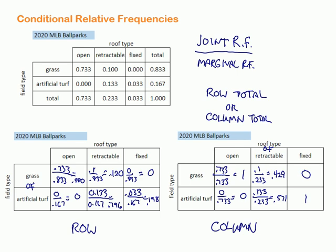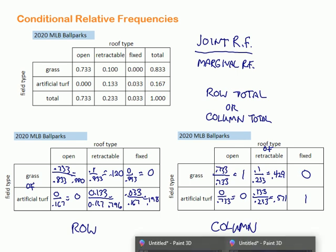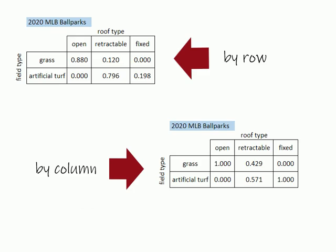Let me get you a nice version of that, that we can look at, and see a little bit more clearly how those things worked out. So again, here we have the by row with the types. Remember, this is the of over here. So of the grass fields, 88% are in open-air stadiums, and 12% are retractable roof. And then, of the artificial turf stadiums, we've got this. And then, if we go by column, we're talking about of this thing, of the open, of the retractable, of the fixed.